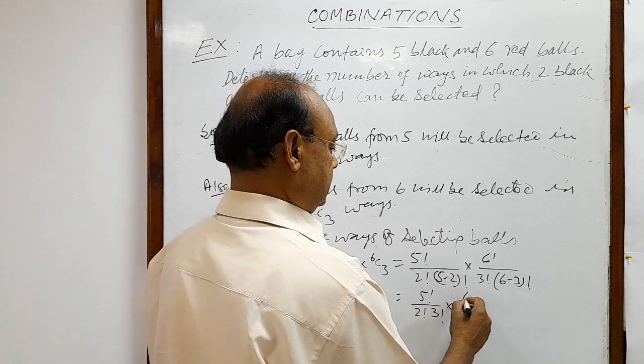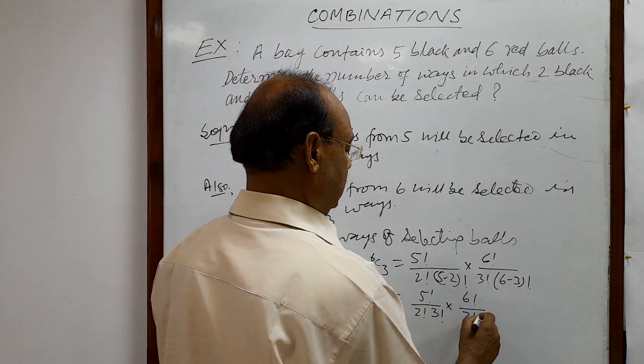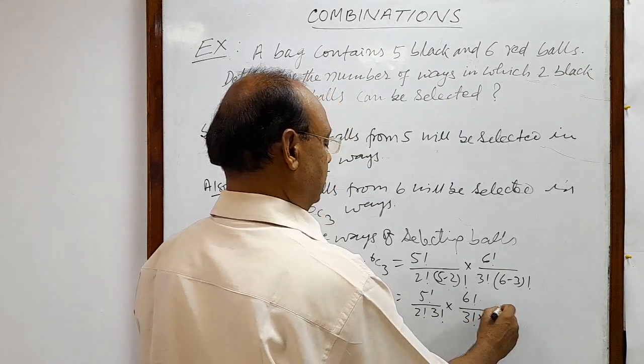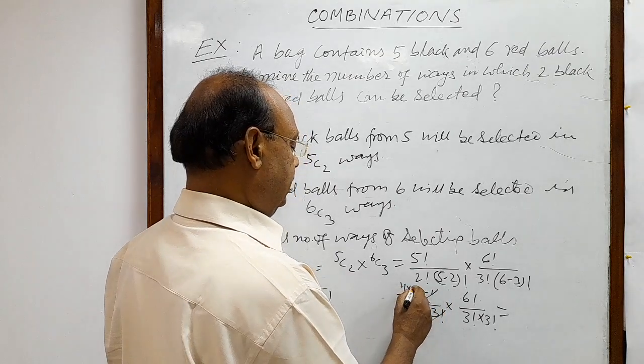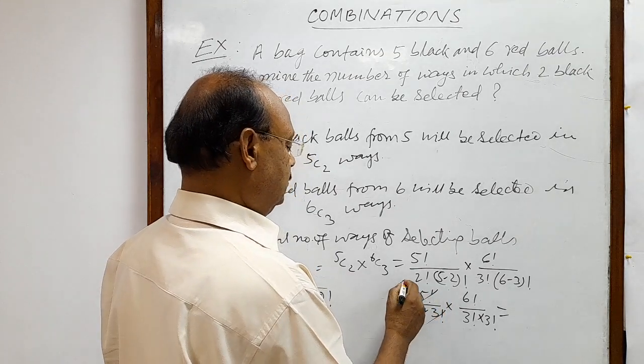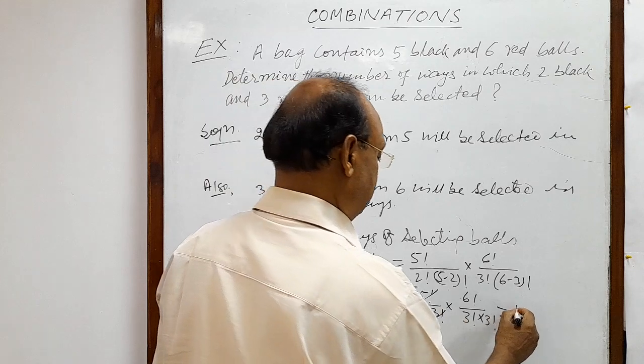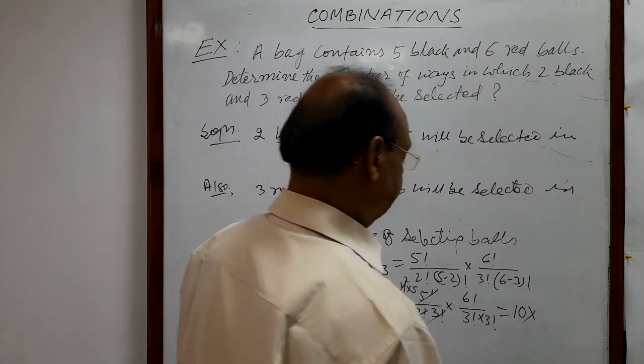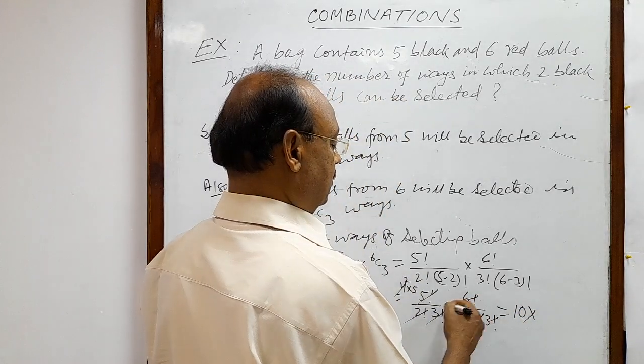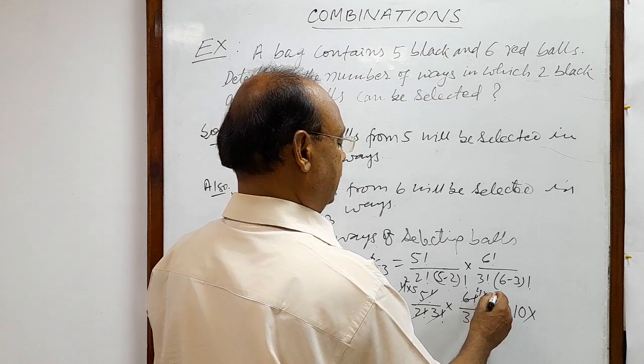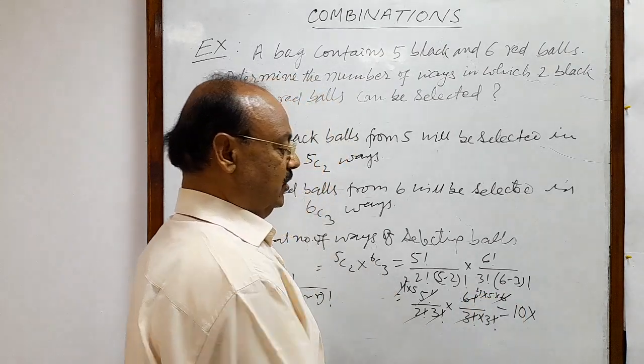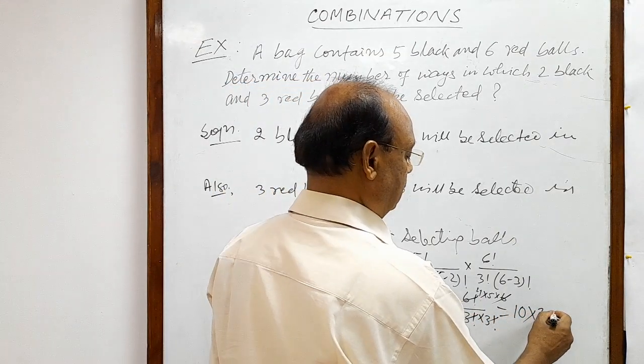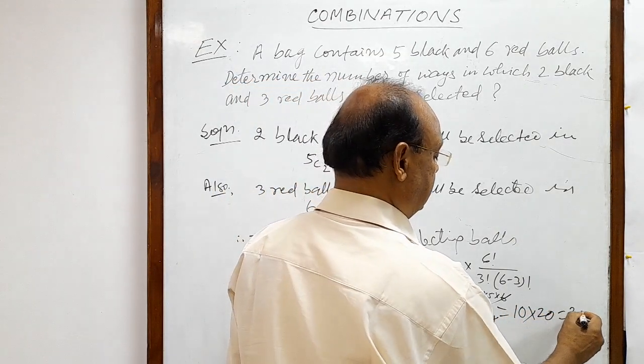And here 6 factorial by 3 factorial into 3 factorial. We will get 4 factorial cancelled out, here we will get 4 into 5, 2 will be cancelled out, so 2 into 5. This is equal to 10. Into here, 3 factorial will be cancelled out, here we will get 4 into 5 into 6, and 3 factorial will be cancelled out with 6. So 4 into 5 into 20, and finally this is 200.